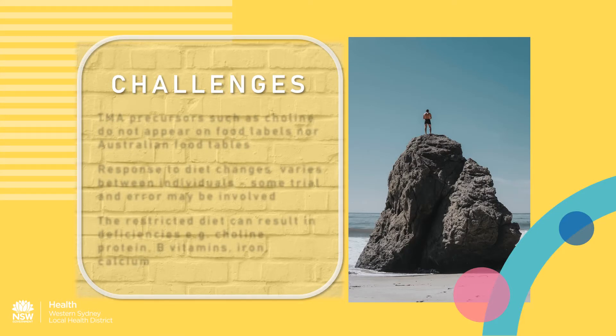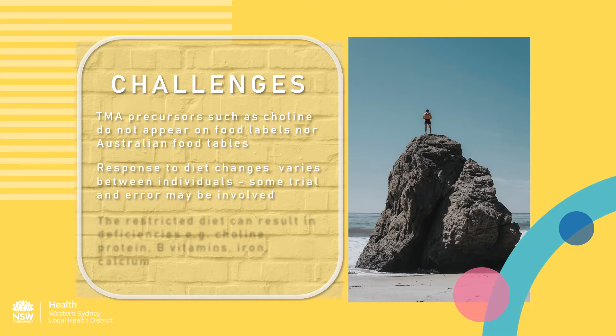There are some challenges involved in implementing the diet for TMAU. Firstly, TMA precursors such as choline do not appear on food labels, and choline content is not included in Australian food tables, making it more difficult to provide detailed guidance. Another challenge is that responses to dietary modifications vary significantly between individuals, so some trial and error may be involved. Finally, foods that are high in TMA precursors often contain important nutrients such as protein, B vitamins, iron, calcium and zinc, so intake must be carefully monitored to avoid deficiencies.